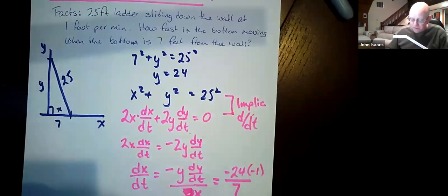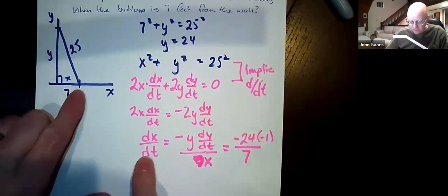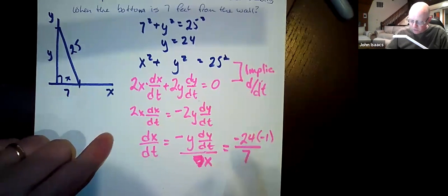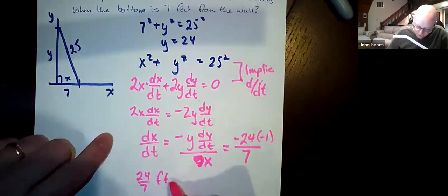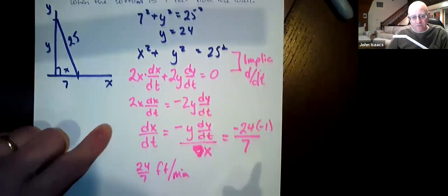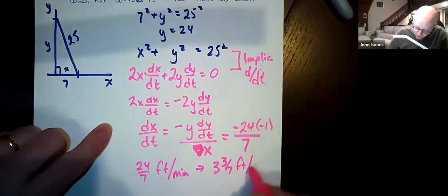And therefore, the speed of the base of the ladder, the dx/dt, is 24 sevenths. The ladder is moving 24 sevenths feet per minute at this particular moment. Or we could think of that as 3 and 3 sevenths feet per minute.